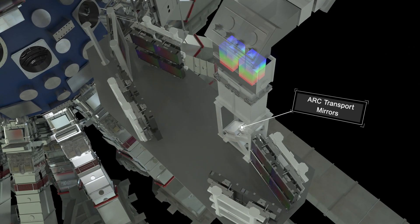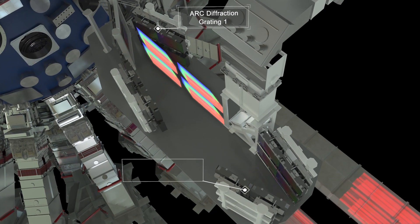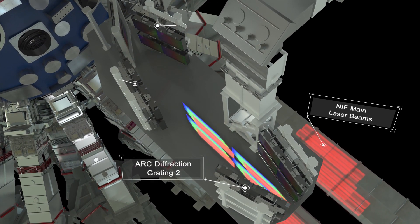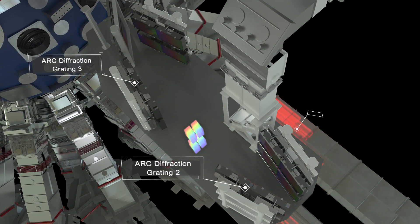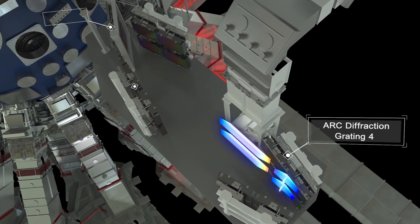The beamlets enter the compressor vessel, which has four sets of diffraction gratings that squeeze and concentrate the beamlets after each contact. This compression, part of the chirped pulse amplification process, makes them shorter but also extremely powerful.